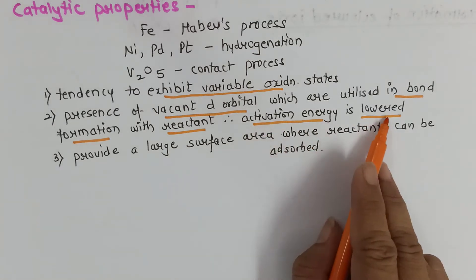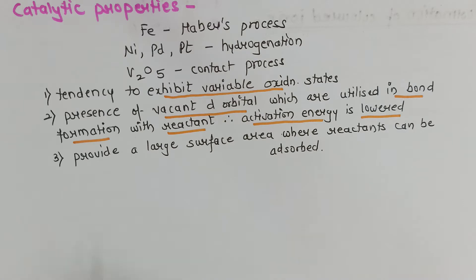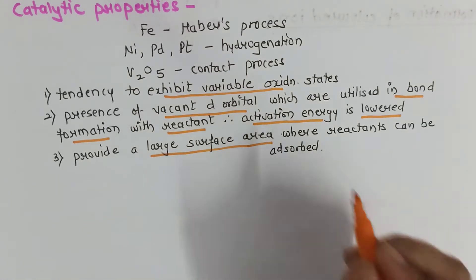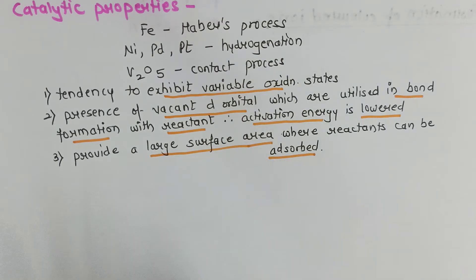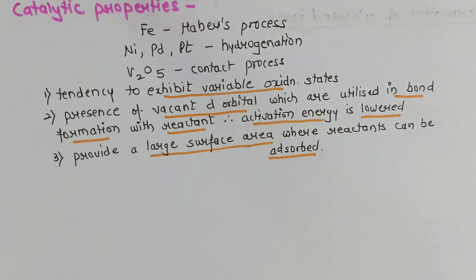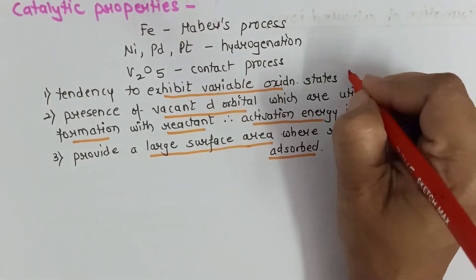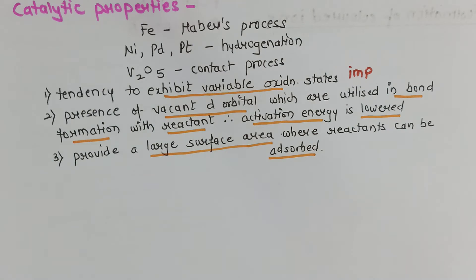We must remember that lower activation energy leads to faster reaction completion, as we will also study in chemical kinetics. Thirdly, because of their small size, transition elements provide a large surface area where reactants can be adsorbed — note the difference between absorption and adsorption, which we will discuss in surface chemistry. The most important reason for catalytic activity is the tendency to exhibit variable oxidation states.